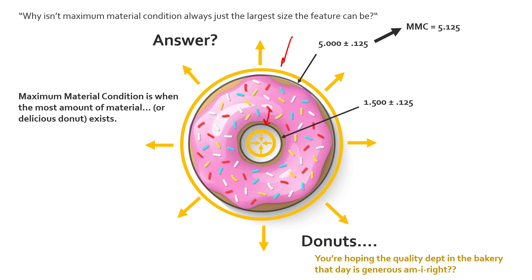For the internal feature, we're not getting a larger diameter — we want a smaller diameter. A smaller diameter means more donut, more material. We've maximized our donut. So the smallest diameter for our size dimension of 1.5 ± 1/8 inch would be 1.375 inches.